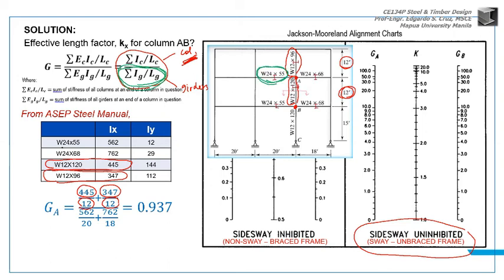W24 by 55. Look in the manual - 24 by 55. It's oriented like this - this is the girder. So its bending is about the major axis because the section is standing up, so you'll use Ix: 562. What's the length of the left girder? That's 20 feet.